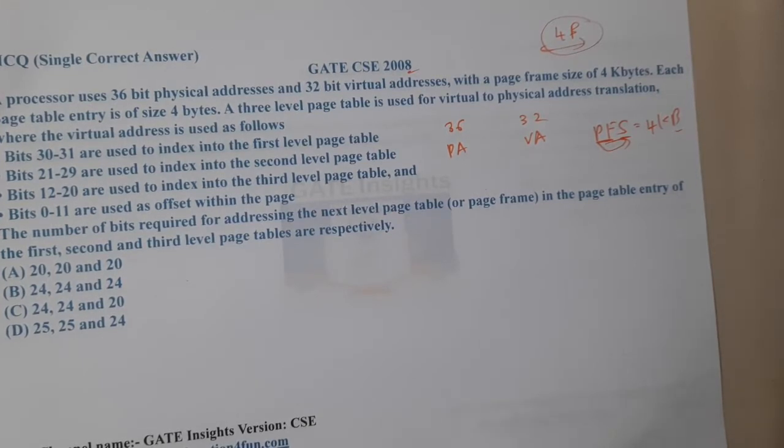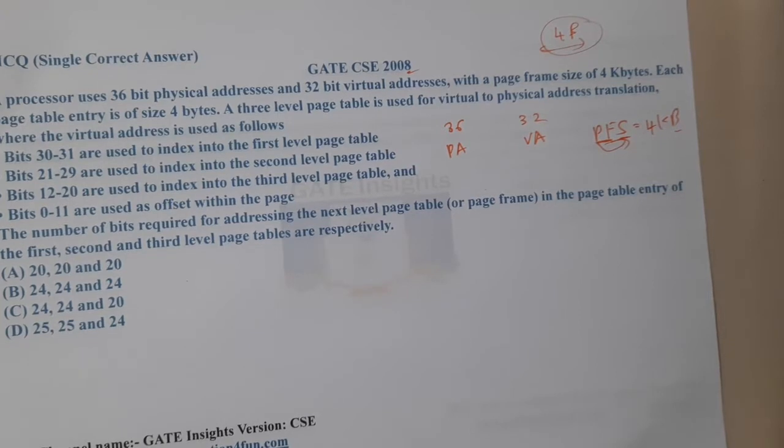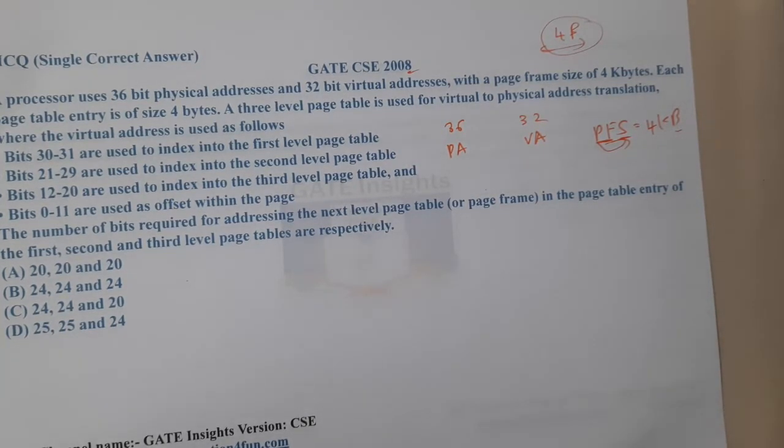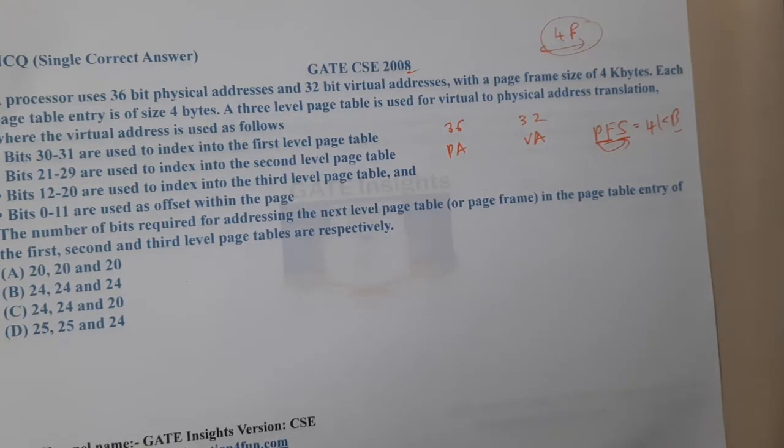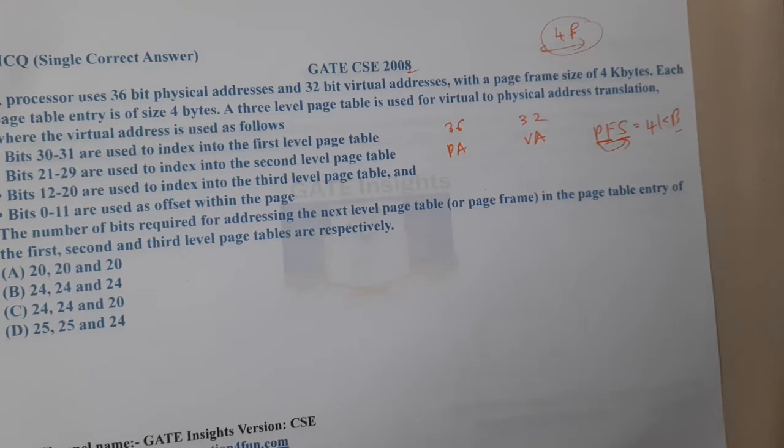So bits 30 and 31 are used to index the first page table, 21 to 29 are used for second page table, 12 to 20 are used in third page table, and bits 0 to 12 are used in offset. Now they are asking the number of bits required for addressing the next level pages or page frames in the page table entry of the first, second, and third level.